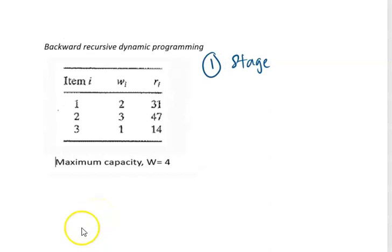The second element will be the alternative. The alternative refers to the number of units of item i, so in this case you have to make a decision whether you want to choose one unit, two units, three units, etc.